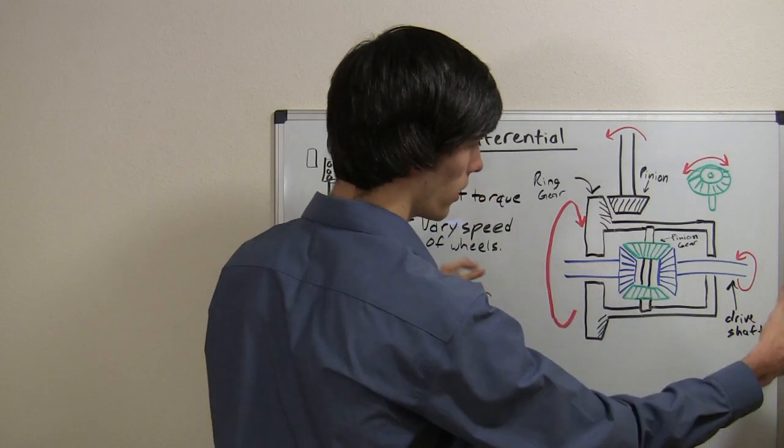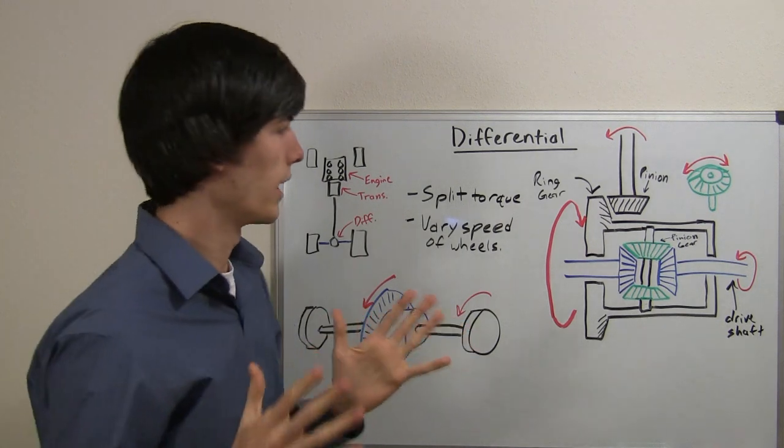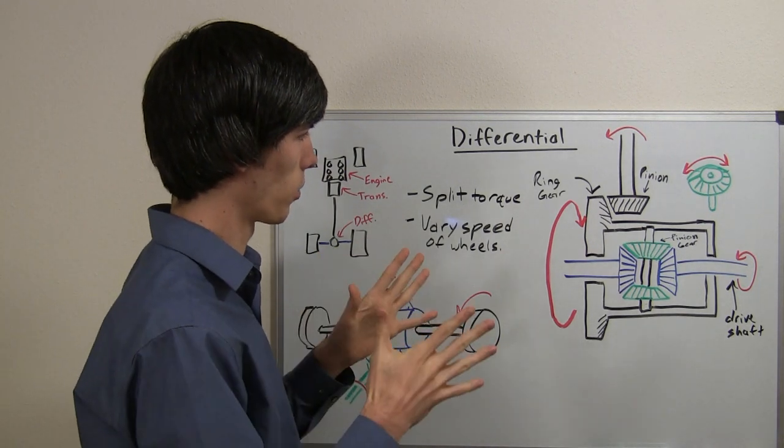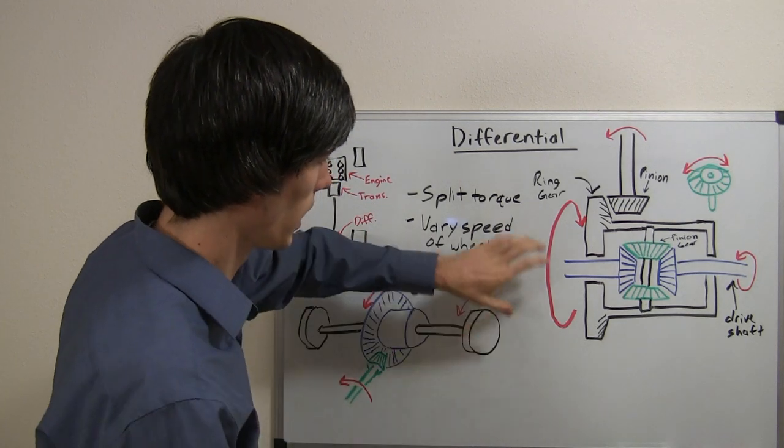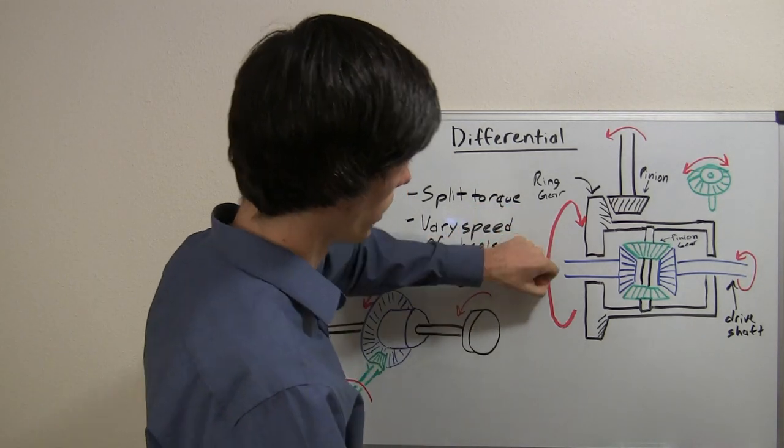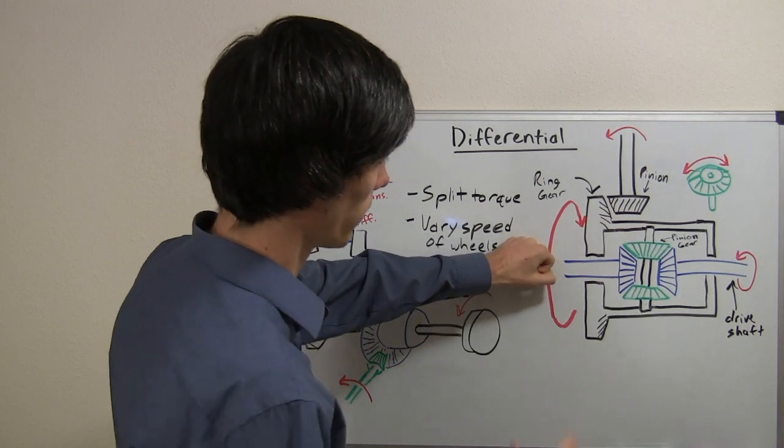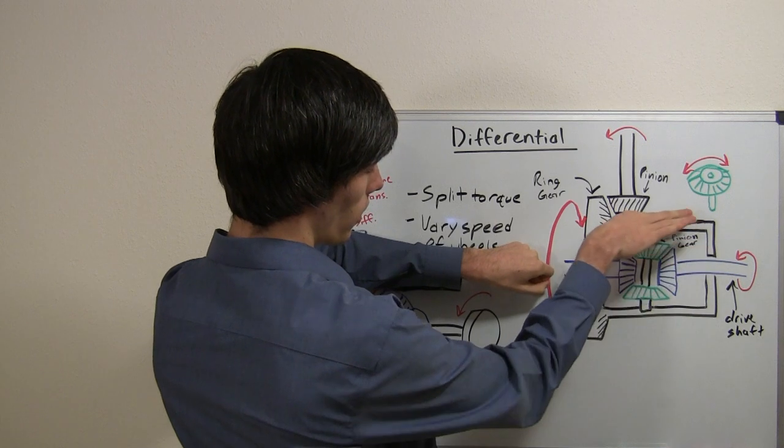By rotating those axles forward, you're rotating the wheels forward and the car goes forward. Now here's the tricky part and this is where you get into the whole open differential allows for varying speeds. If you hold one tire, so I'm just going to grab this shaft and because I'm incredibly strong, it's not going to be able to rotate. So,